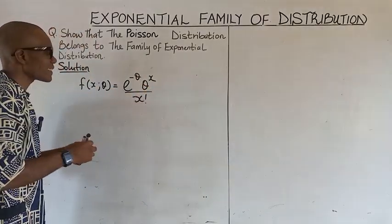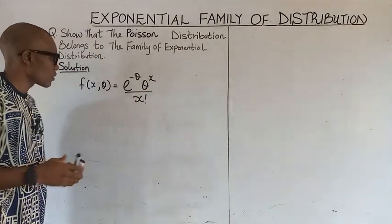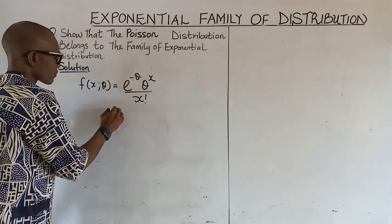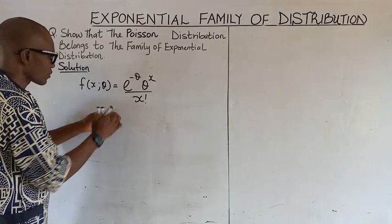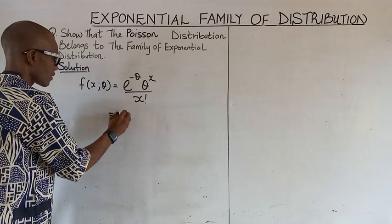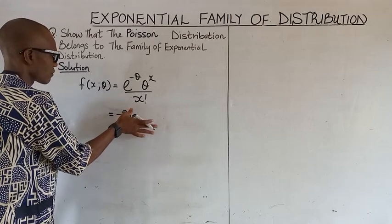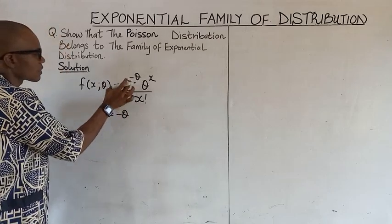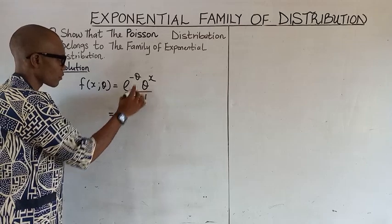The first thing to do is either take the exponent or the log of the function. If we take the log function, it gives us negative theta, because this is an exponential function.